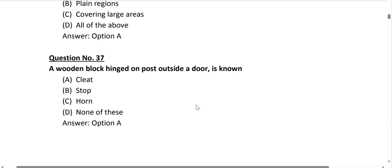Question number 37: a wooden block fixed on the post outside the door is called a cleat. Option A is correct.